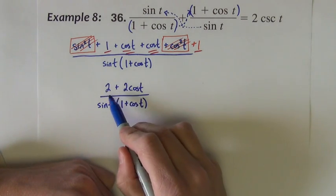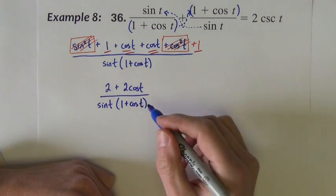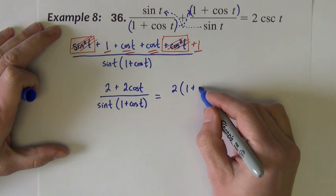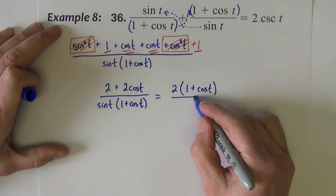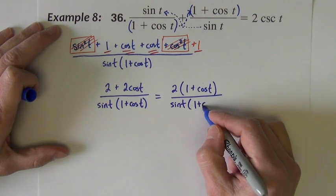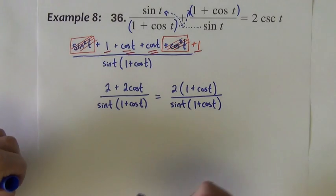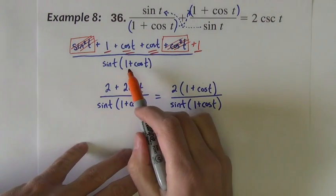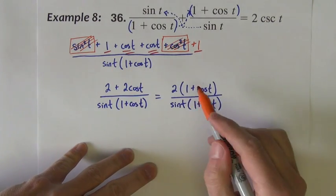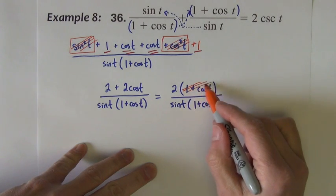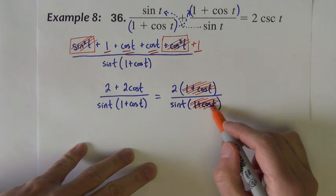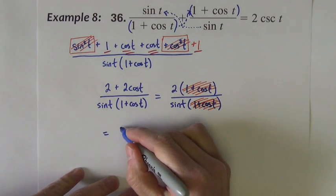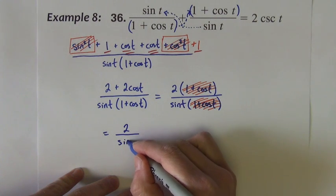Now in the numerator notice there are some common factors. There's a common factor of 2 in each of these terms. So 2 taken out leaves 1 plus cosine t. And now look where we're at and what has happened. You see now why I suspected possibly not to multiply these together. Because now I've got a 1 plus cosine t and a 1 plus cosine t that can now cancel out of this problem. So we're left with 2 divided by sine t.